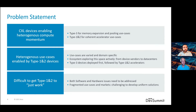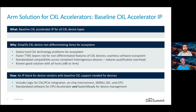With that problem statement, I'll hand off to my colleague Jason, who will talk about what ARM is doing to address this problem space. Thank you. At the highest level, ARM's vision for a solution is a baseline accelerator IP for all CXL device types. We want to simplify the CXL device non-differentiating items for the ecosystem to make it easy for everyone to develop their CXL accelerator by solving some of the hard CXL technology problems. This will enable faster time to market, lower risk of development, and provide a seamless software ecosystem for everyone.